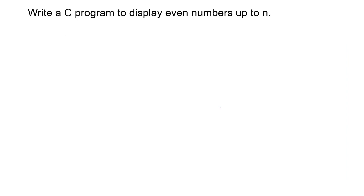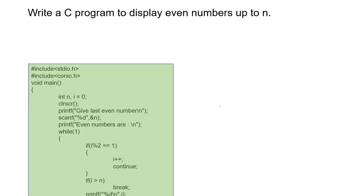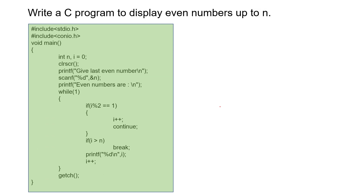Now we'll see an example. Write a C program to display even numbers from 1 to n. So we have a range of 1 to n and we have to display even numbers between 1 to n. I have a program here. Firstly, we have to take a number — that number is n, which is the last number up to which we have to find even numbers. So I am asking the user to give the last even number, and then the user will input the value of n.